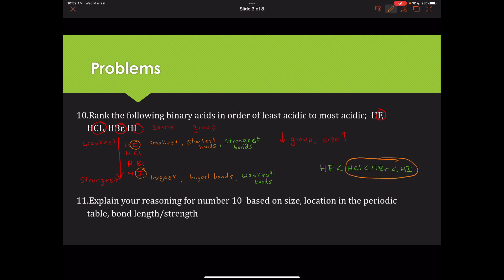HCl, HBr, and HI are all in our list of six strong acids — they all completely dissociate. HF is considered a weak acid. Even though it has a very polar bond, it's weak because of that very short bond length, which leads to strong bonds. So with binary acids, strength depends predominantly on bond length: the shorter the bond, the harder it is to break, the weaker that acid will be. Stronger acids have long bond lengths and weak bonds, so they break apart easily.